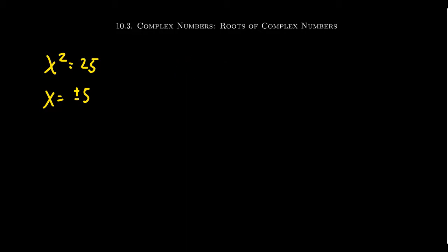In contrast, if you look at the equation x squared equals negative 1, the way we usually solve this is to take the square root of both sides. There's a positive and a negative choice. The square root of negative 1 is just i, so we see there are two solutions: plus or minus i. There are two square roots of negative 1 — i and negative i — just like there are two square roots of 25, which are 5 and negative 5.